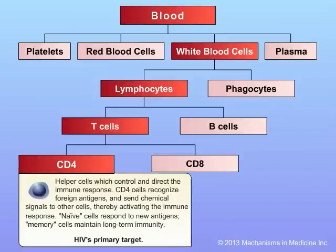CD4 cells are called helper cells. These cells can control and direct the immune response; they recognize foreign antigens and send chemical signals to other cells, thereby activating the immune system. Naive cells can respond to new antigens and then become memory cells that maintain long-term immunity regarding antigens and infectious agents previously seen. CD4 cells are the primary target of HIV.